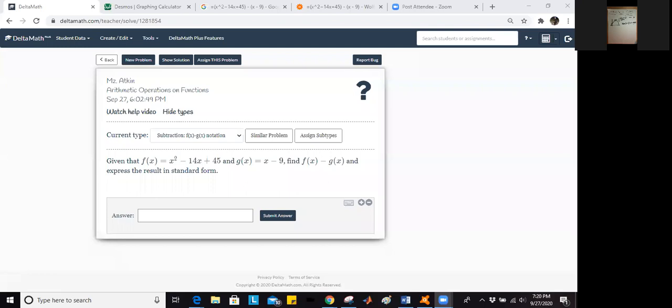Okay, so here we are on Delta Math. Our question says: given that f of x equals x squared minus 14x plus 45, so this is some sort of quadratic going up, and g of x equals x minus 9, that's some linear function, find this new function defined by f of x minus g of x.